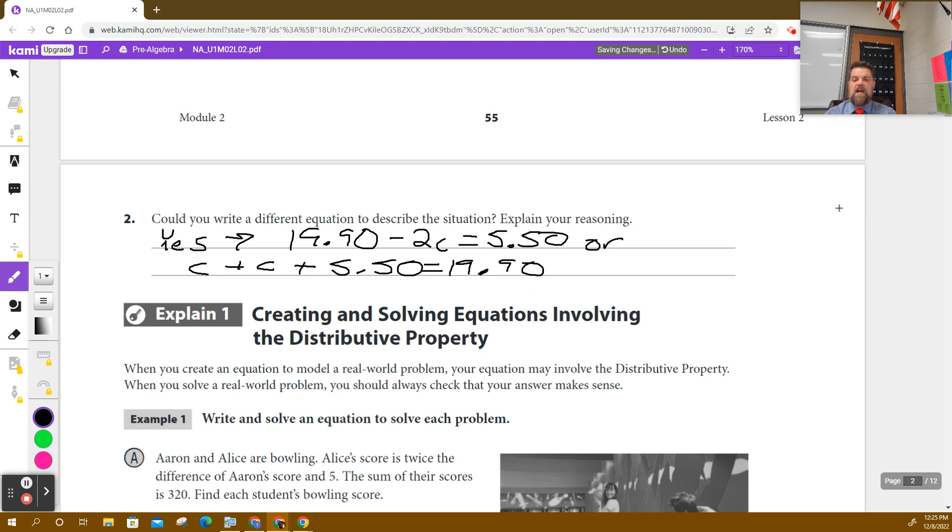And what's interesting is that most kids that I have in this class would say, well, I know how I would solve it, Mr. Adams. I don't need to write an equation. I would just say $19.90 and I know I subtract $5.50 because that was the cost of the yogurt. So that leaves me with $14.40, right? And then that is the cost of two tickets. So I would take $14.40 and divide it by two and get $7.20.